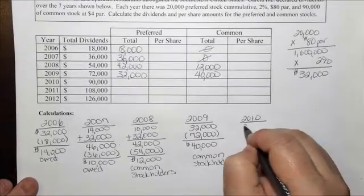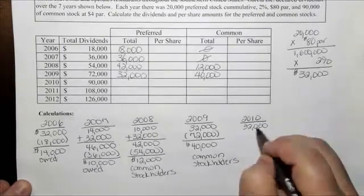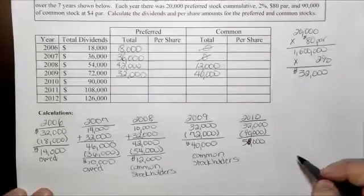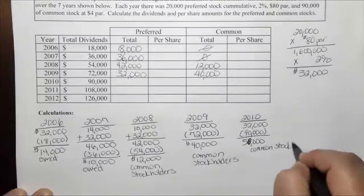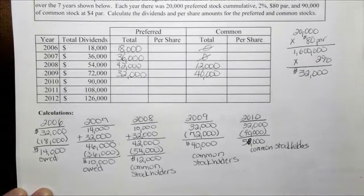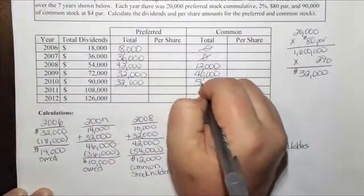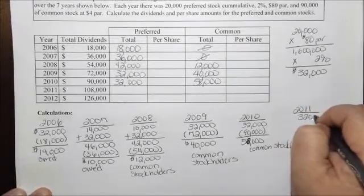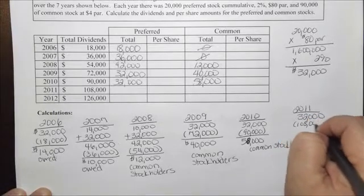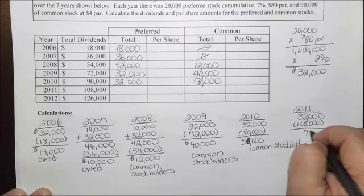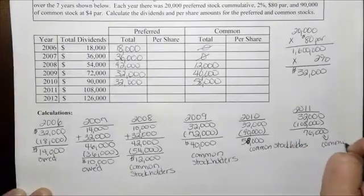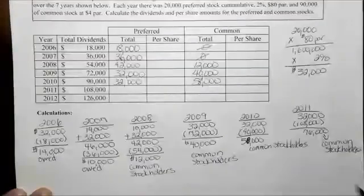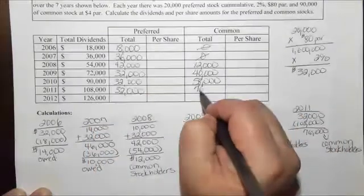For 2010, $32,000 should be paid out to the preferred stockholders. $90,000 was declared, so $58,000 goes to the common stockholders. In 2011, $32,000 should be paid out to preferred, $108,000 was declared, and so $76,000 is going to go to the common stockholders. So $32,000 to preferred and $76,000 to common stockholders.